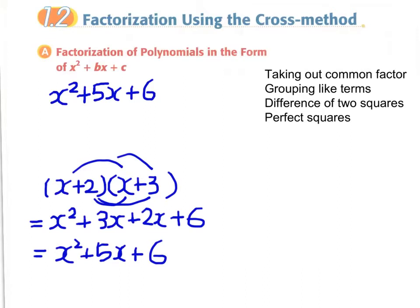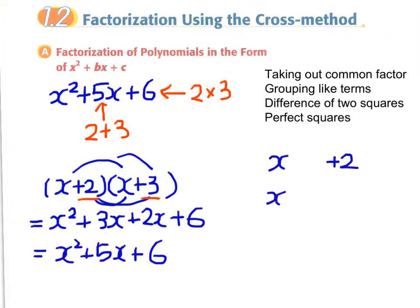Therefore, we now have the idea that the last term of this polynomial is the product 2 times 3, and the middle term is the sum of 2 and 3. Our picture will be even clearer if we write the two factors in a vertical format.